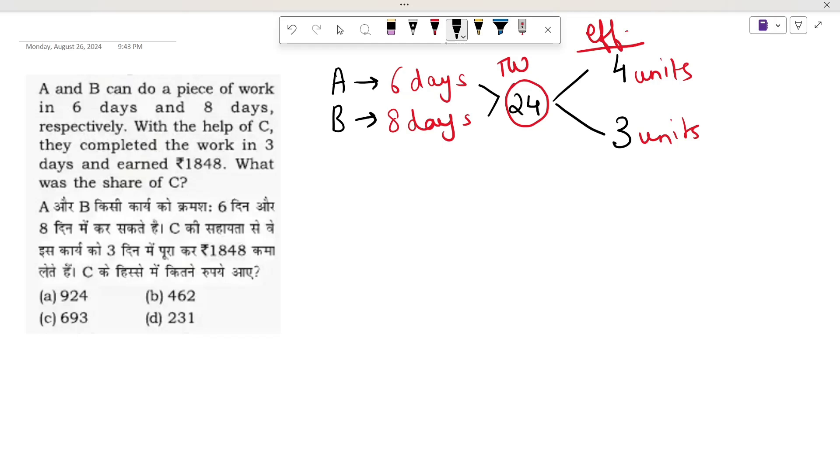Now, with the help of C, they completed the work in 3 days. That means A plus B plus C, in 1 day each, they completed the work in 3 days. And they completed total work of 24. If A does 4 per day for 3 days, it will be 12. If B does 3 per day for 3 days, it will be 9. So total 21.